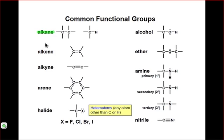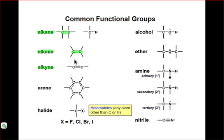For example, alkanes, alkenes, and alkynes are all hydrocarbons, meaning they're composed of only carbon and hydrogen atoms. An alkane is a saturated hydrocarbon, meaning that it does not contain any multiple bonds. An alkene is an unsaturated hydrocarbon that contains at least one carbon-to-carbon double bond. And an alkyne is also an unsaturated hydrocarbon, but it must contain at least one carbon-to-carbon triple bond.